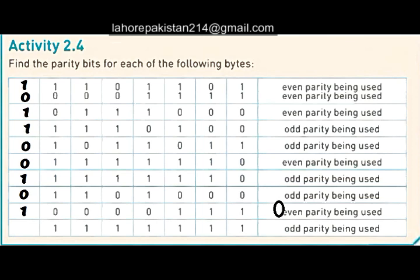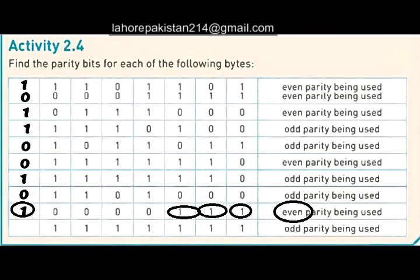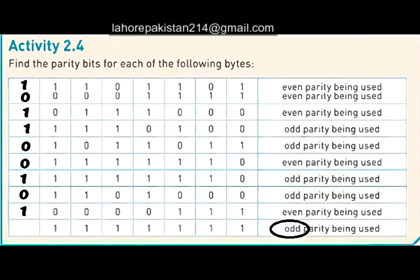In the next part we need even parity. Counting the number of ones: one, two, three — three is odd. In order to make it even, we need to add one to it.